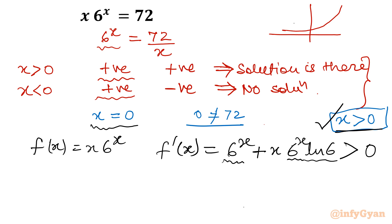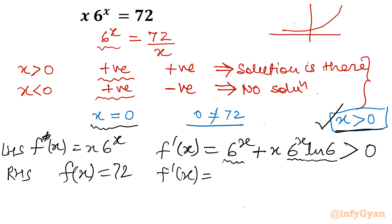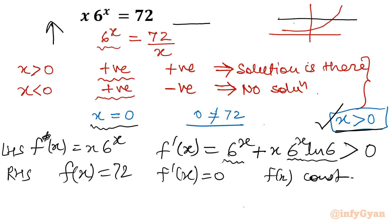The right-hand side is the constant function 72, whose derivative is zero. Since the left-hand side is a strictly increasing function and the right-hand side is constant, there is at most one solution. So there is exactly one unique solution to find.